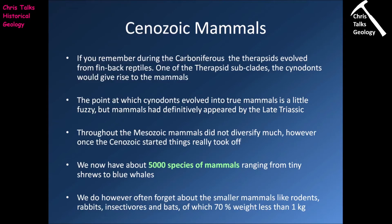Throughout the Mesozoic, mammals didn't diversify much, mostly because they were limited in the environments in which they could operate — most niches were dominated by reptiles, particularly the dinosaurs. Once the Cenozoic started, things really began to take off for the mammals as they could move into and exploit all those newly available environmental niches. This evolution has resulted in approximately 5,000 species of modern mammals ranging in size from tiny shrews all the way up to the massive blue whale. We often forget the smaller mammals — rodents, rabbits, insectivores and bats — of which approximately 70% weigh less than one kilogram.